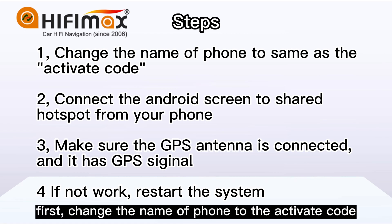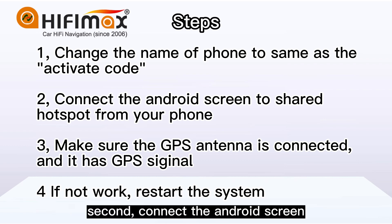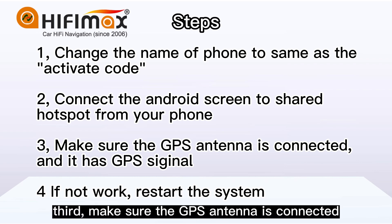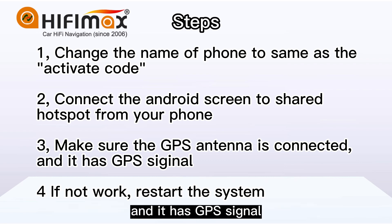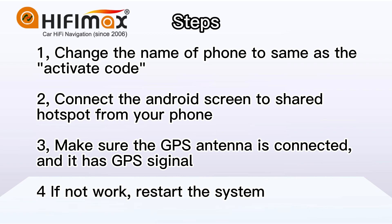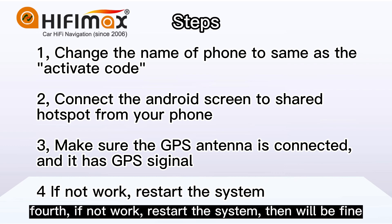First, change the name of your phone to the activation code. Second, connect the Android screen to the shared hotspot from your phone. Third, make sure the GPS antenna is connected and it has a GPS signal. Four, if it does not work, restart the system — then it will be fine.